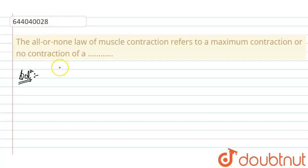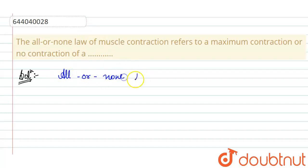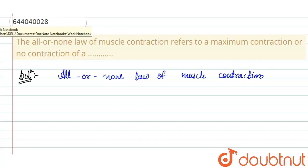The question is: the all-or-none law of muscle contraction refers to maximum contraction or no contraction. This is a fill-in-the-blank type question. Let's first discuss about the all-or-none law of muscle contraction.